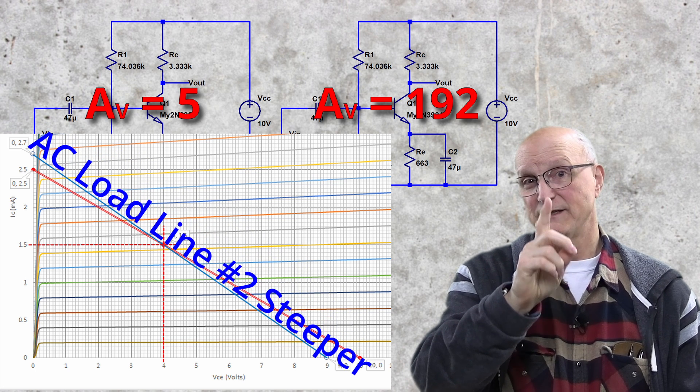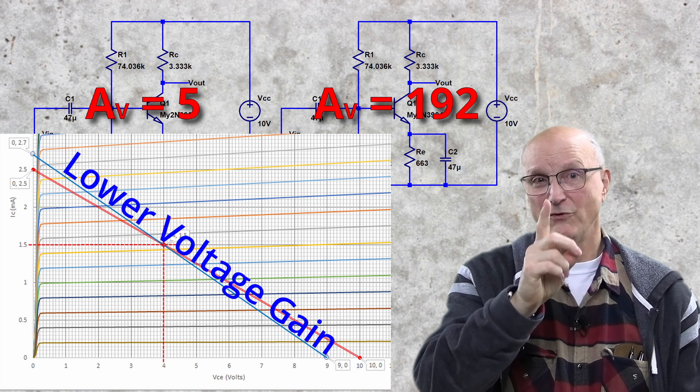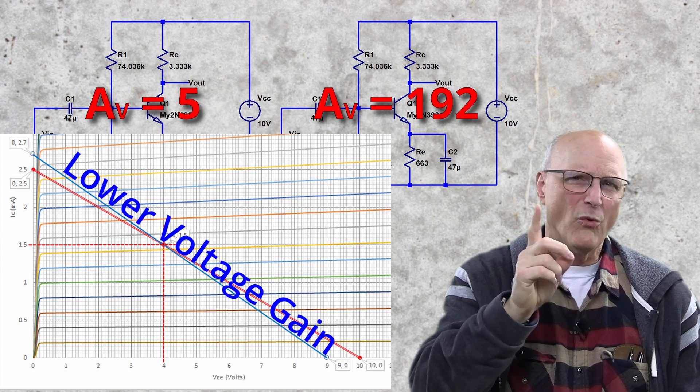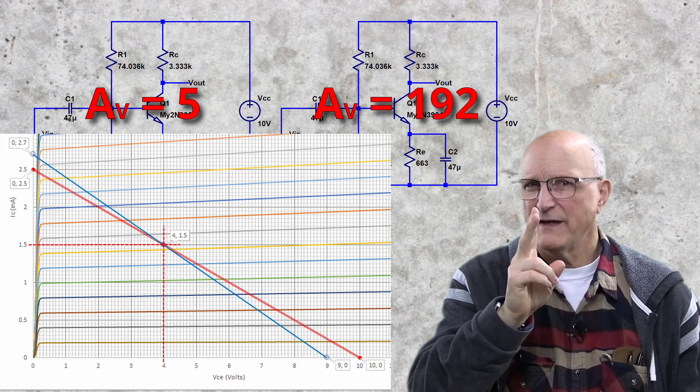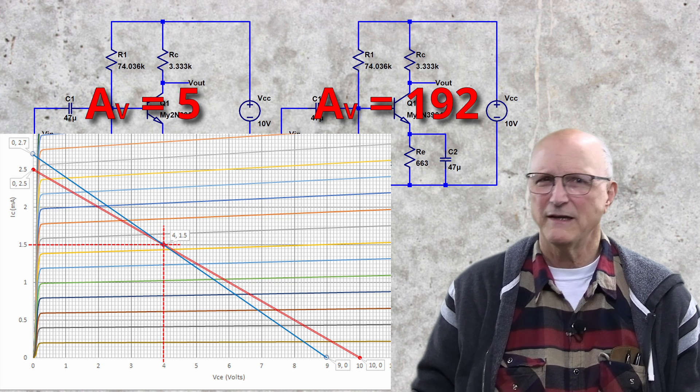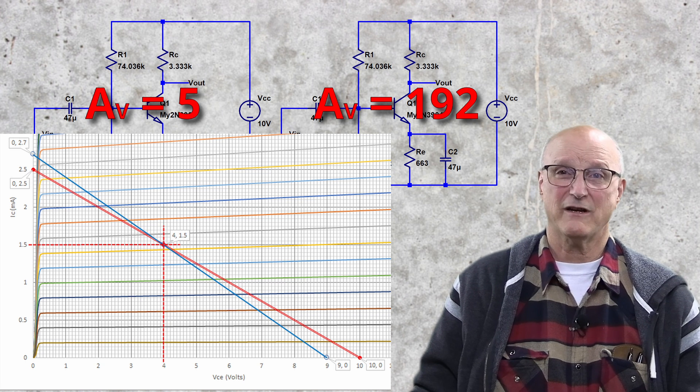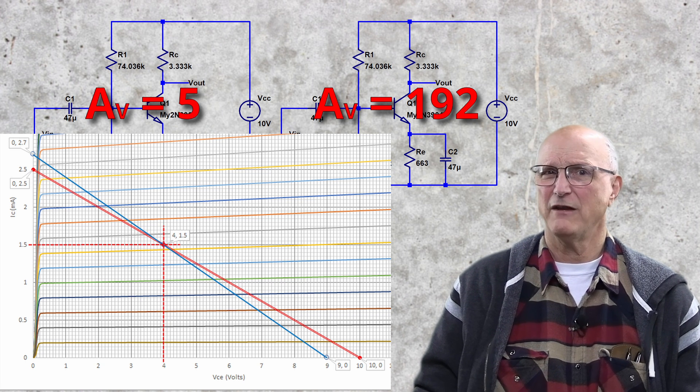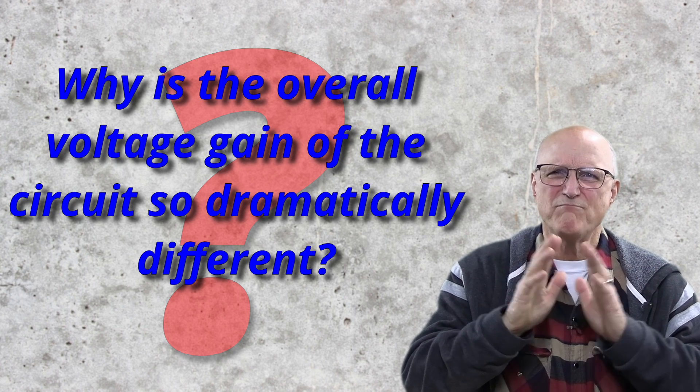Notice these two things. The AC load line is steeper with the second, meaning that the voltage gain would be lower, not higher. And the AC load line is not all that much different than the DC load line, at least not enough to make us believe that the second circuit has 38 times the voltage gain of the first. So, the question that comes to mind, then why is the overall voltage gain of the circuit so dramatically different?